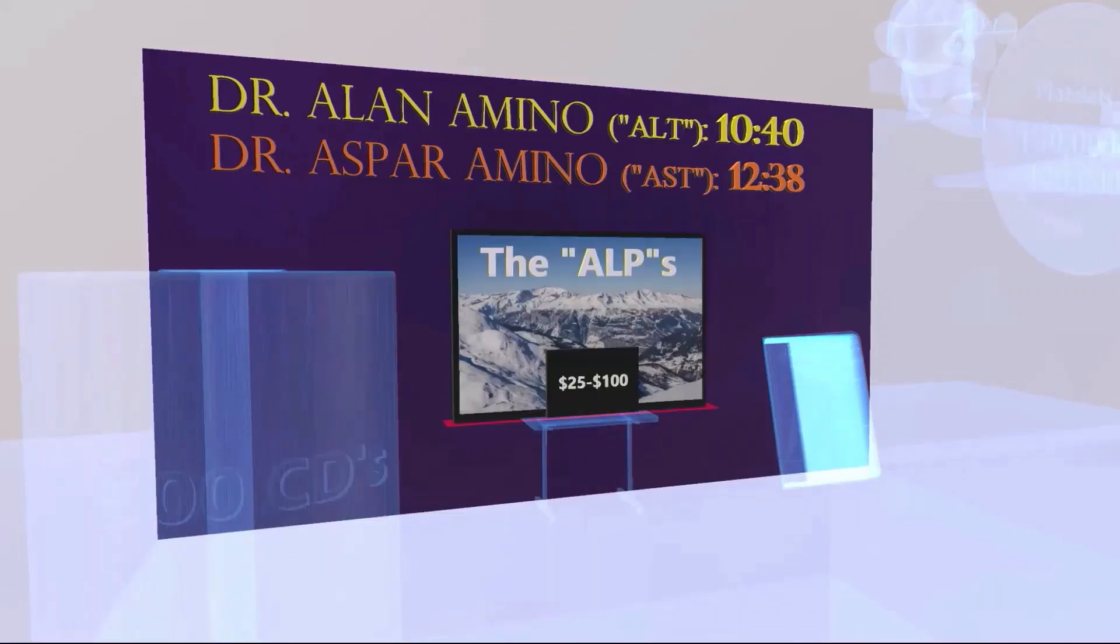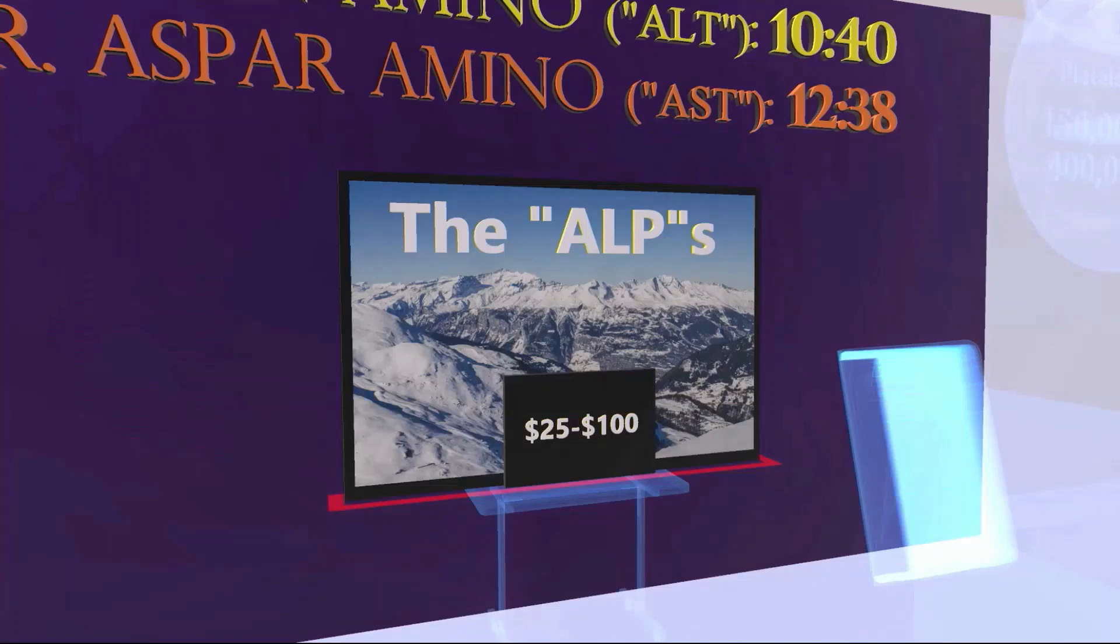Now Dr. Alan Amino and Dr. Aspar Amino leave this beautiful picture of the Alps in their lab because they're trying to sell it. The problem is no one wants to buy it because they're selling it for $25 to $100. The Alps of course reminds us of ALP alkaline phosphatase, and the reference range for this is 25 to 100 units per liter.